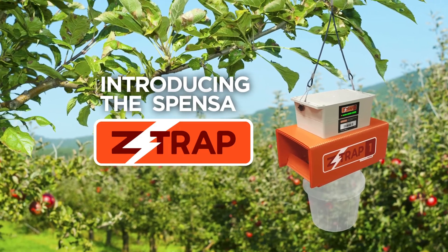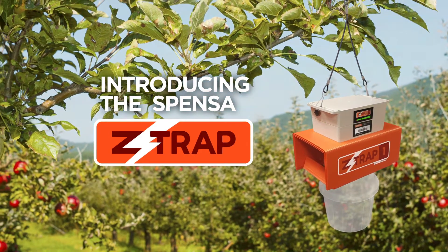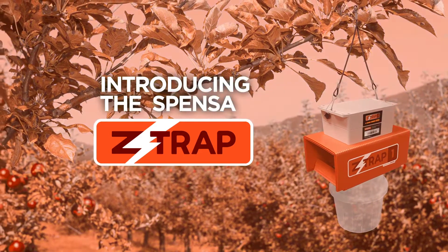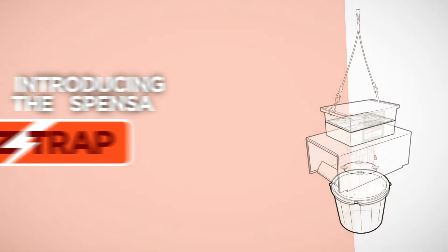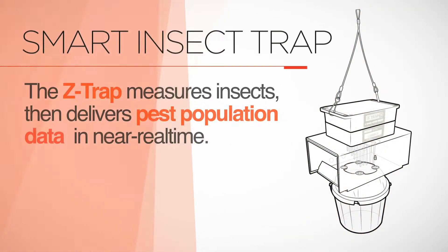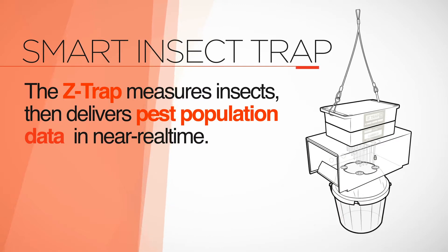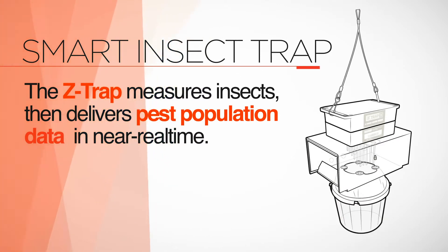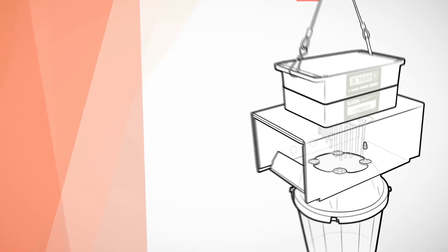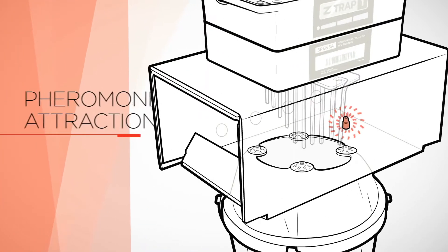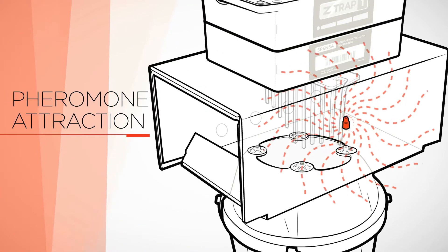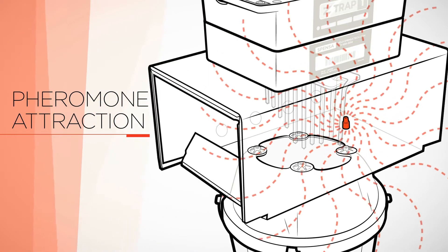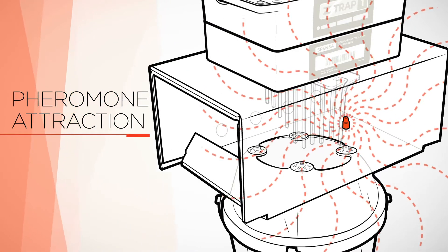Introducing the Spensa Z-Trap. The Z-Trap system is a way for farmers to use smart insect traps to analyze and predict insect populations in their fields. Standard pheromones are inserted into the trap to attract the desired insect.